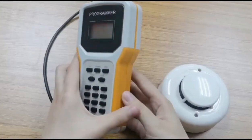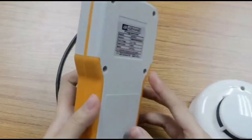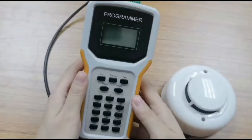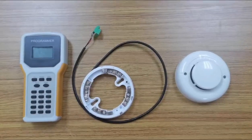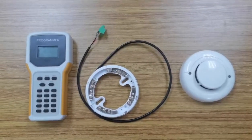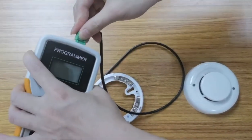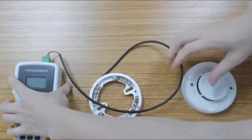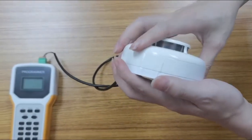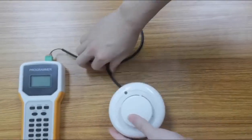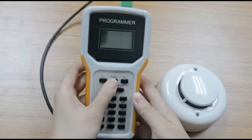How to program adjustable fire alarm devices. Here is an adjustable programmer. We'll show you how to program and code adjustable fire alarm devices. We need to connect this wire with the coder and then put the smoke detector into the base. First, press the power button.